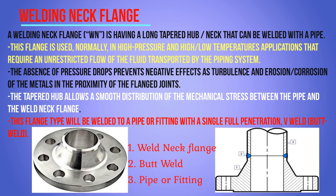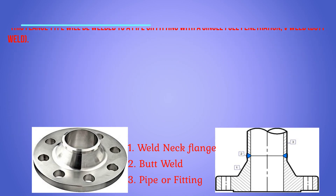The tapered hub allows a smooth distribution of mechanical stresses between the pipe and the weld neck flange. This flange type is welded to a pipe or fittings with a single full penetration V-butt weld. In the picture, number one is the weld neck flange, two is the V-type butt weld, and three is the pipe or fittings. This is the most commonly used weld neck flange in the piping system, particularly in oil and gas.